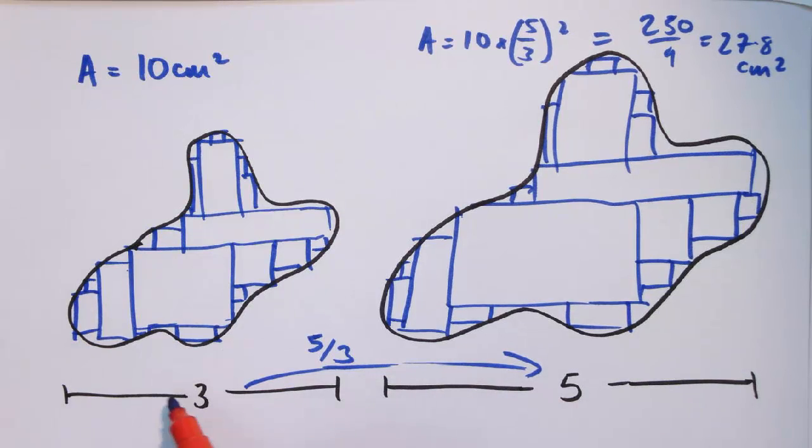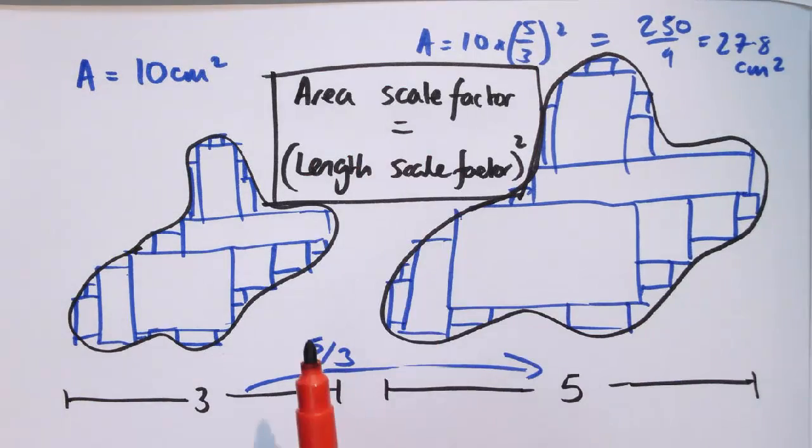But we've got, whenever there's a certain length scale factor, we've got the result that the area scale factor is the length scale factor squared. And that is the key result to take away from this.